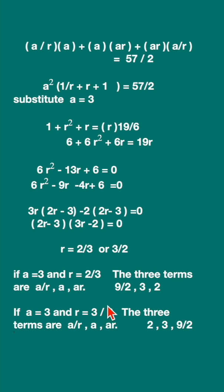If we take value of r as 3 upon 2, the three terms are 2, 3, and 9 upon 2.